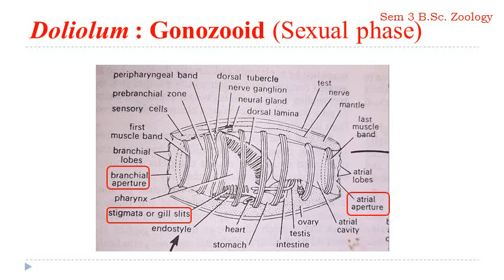The zygote formed develops into a tailed tadpole larva. This tailed tadpole larva acquires eight muscle bands like the gonozoid and metamorphoses into the asexual phase — the ozoid phase, which is the Gregaria. So we will now see the features of the ozoid.